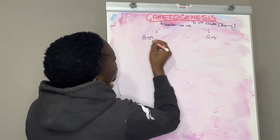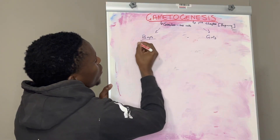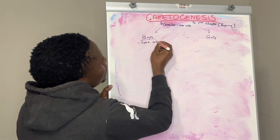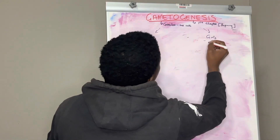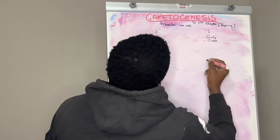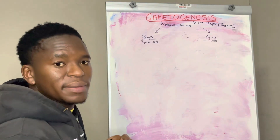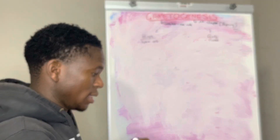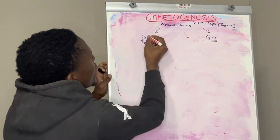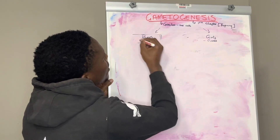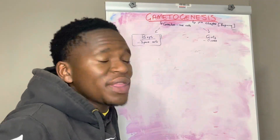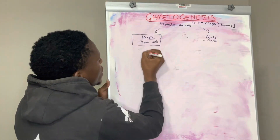In boys we said they will develop sperm cells, and in girls they will develop ovums as part of their secondary sexual characteristics. In developing these, we are going to name the process by which sperm cells form within boys as spermatogenesis.